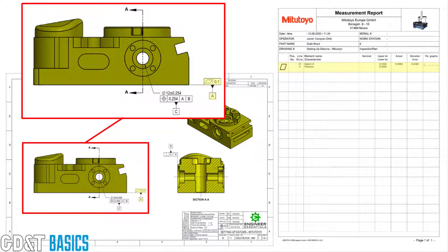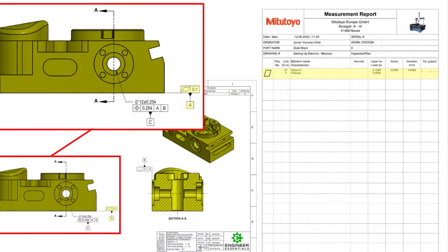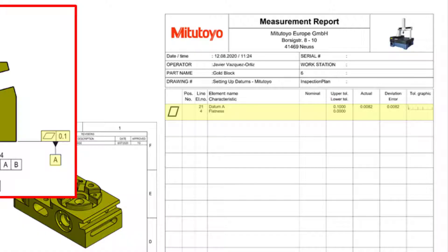With the flatness inspection now complete, the software is already putting together our measurement report. We see the flatness symbol on there in the first row. And over on the right, we see the tolerance that Javier entered into the software, which was 100 microns. If you look at the deviation on there, it shows that we came in a little over 8 microns. This is well within our tolerance limits. And we can now move on to inspect for datum feature B.